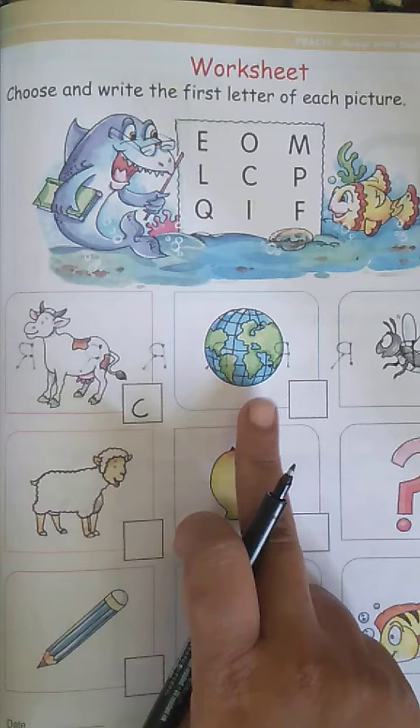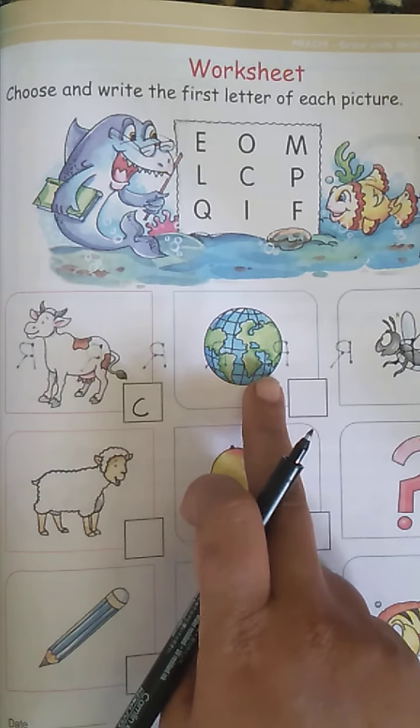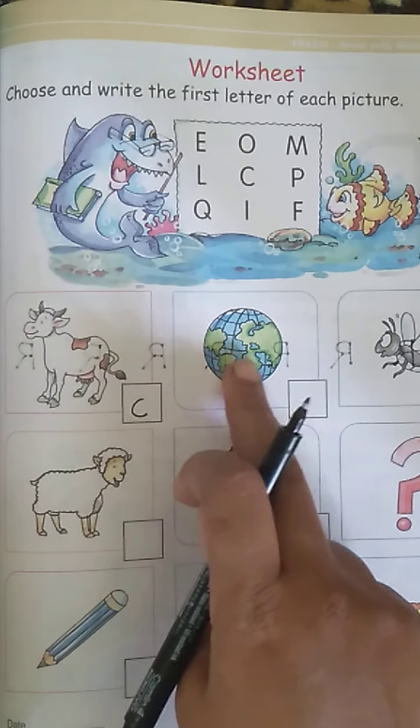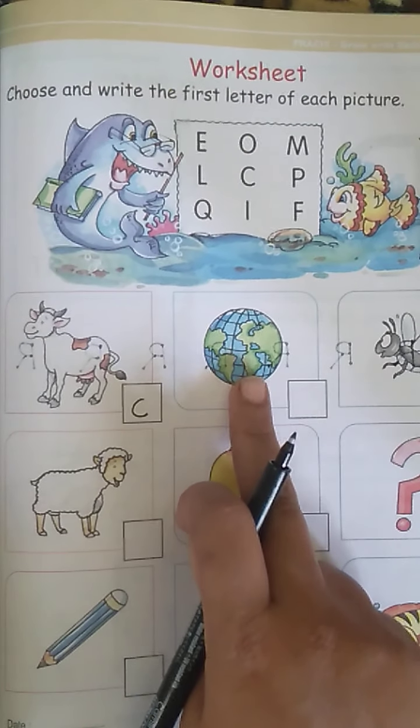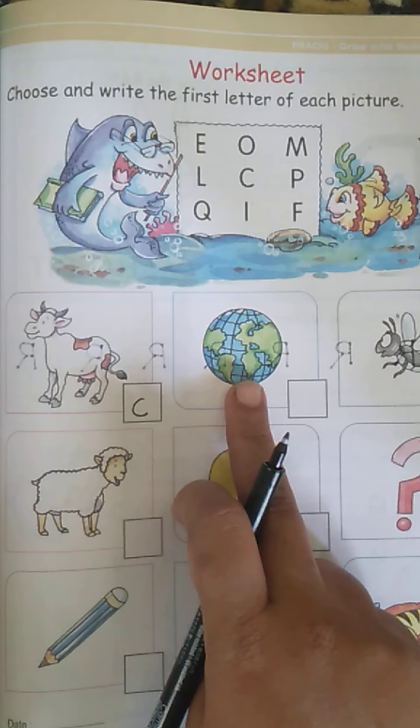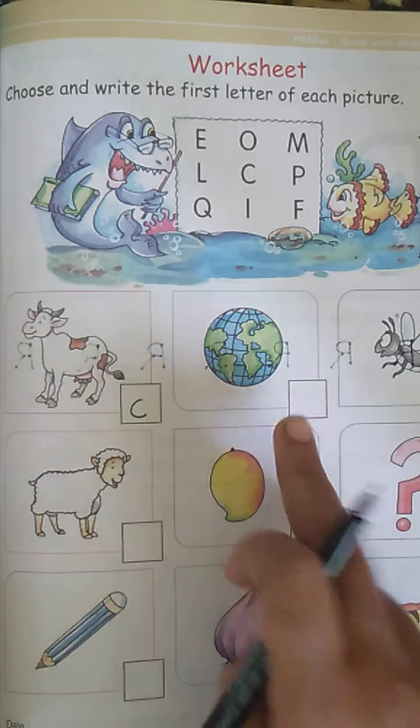We are going to write the letter C here. Now, do you know what you see in this picture? This is how the place we live in is called. This is the earth. Earth is the place where we all live. So, the earth starts with the letter E. We are going to write the letter E here.